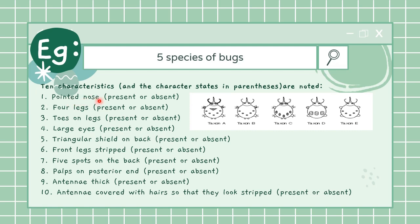We'll start with the first one: pointed nose, where present and absent is the character state that is defined. If you observe carefully all of my bugs have pointed noses. Presence of four legs - yes all of my five bug species have four of them.